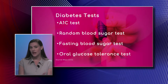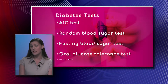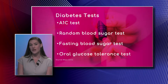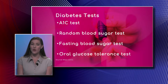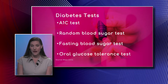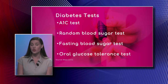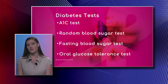Normal is less than 5.7% and we diagnose diabetes at 6.5% or higher. You could also check a random blood sugar, you could check fasting blood sugars, and you could also do the oral glucose tolerance test to diagnose diabetes.